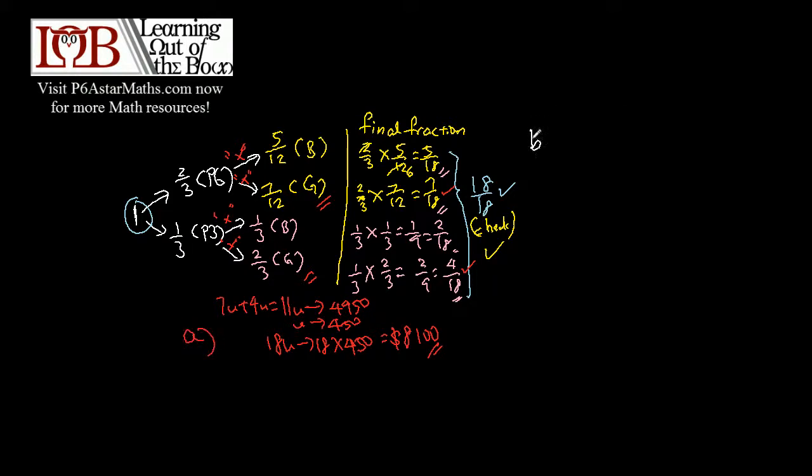And for part B, what is the difference between the sum of money raised by all the boys and all the girls? So for the boys you have 5 and 2, and they add up to 7 units.